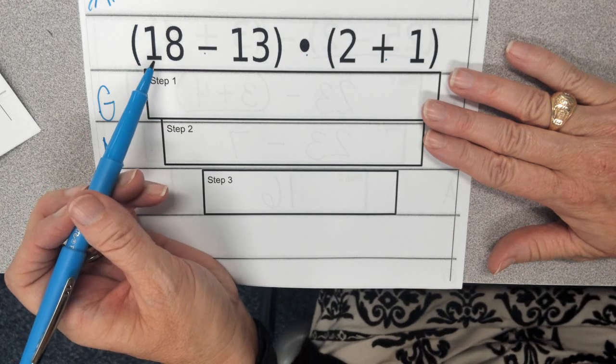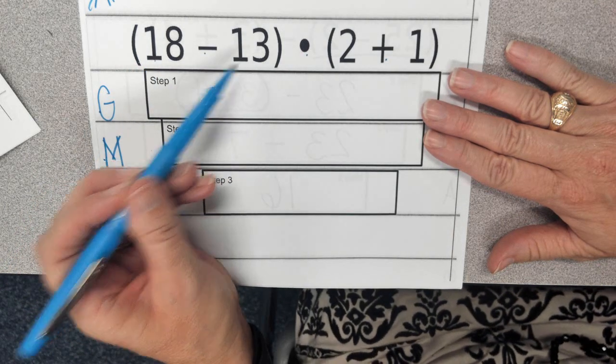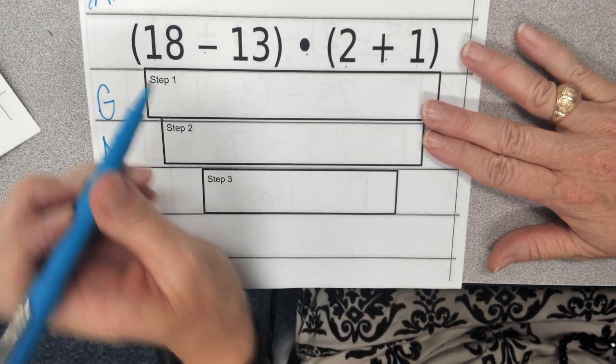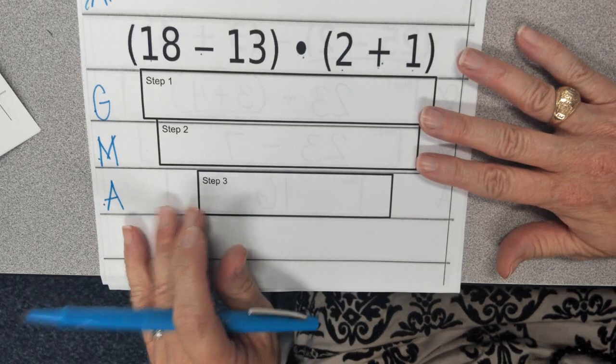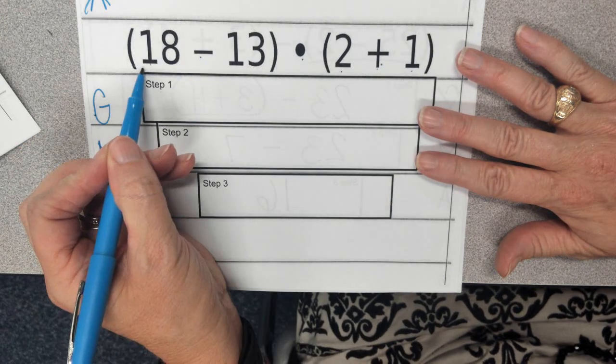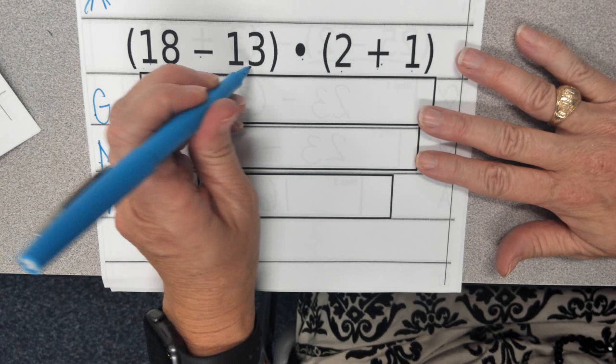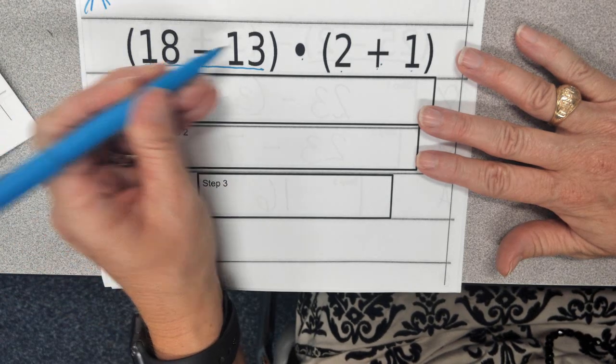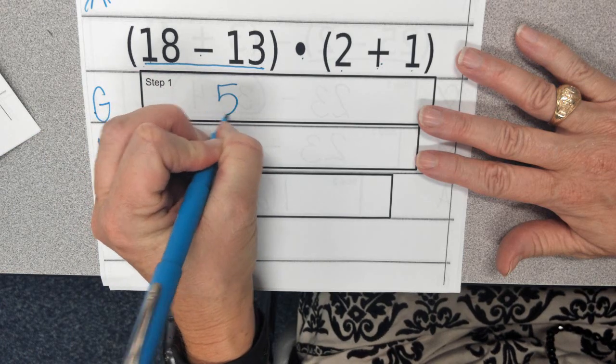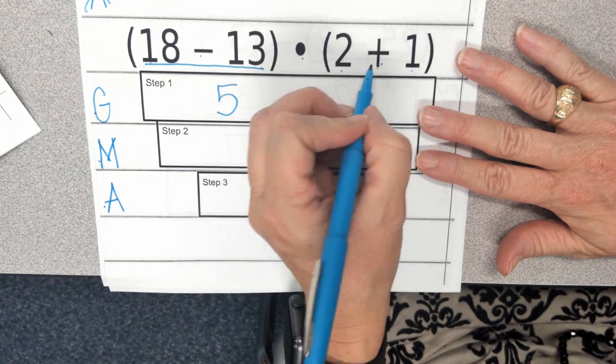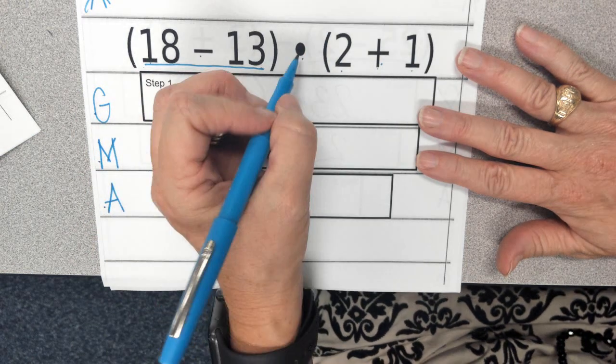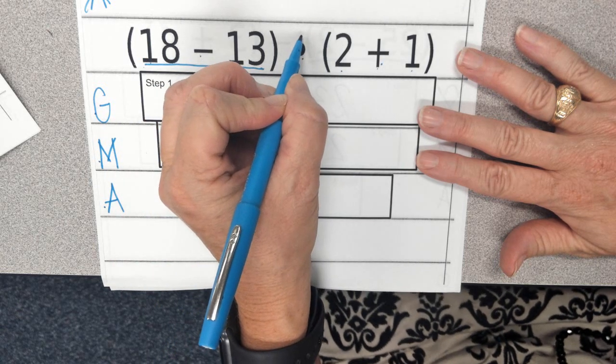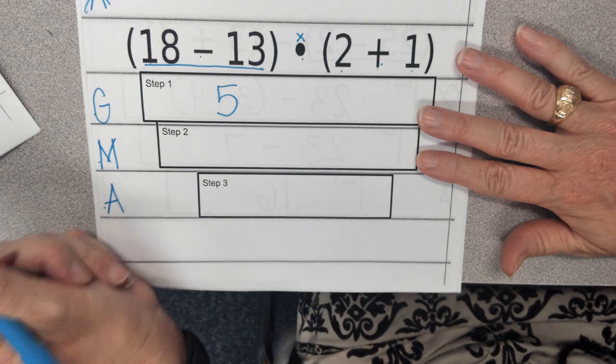So now we have the number 18 minus 13, and 2 plus 1. They're both in grouping symbols, and since they're both additive actions, I'm going to start at the left and move to the right. So I'm going to underline 18 minus 13, and 18 minus 13 is the number 5. Then I'm simply going to rewrite the rest of this. You may want to go ahead and take this multiplicative sign, this multiplying sign, and just turn it into an X.